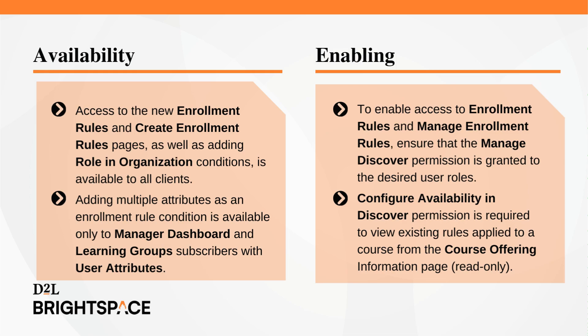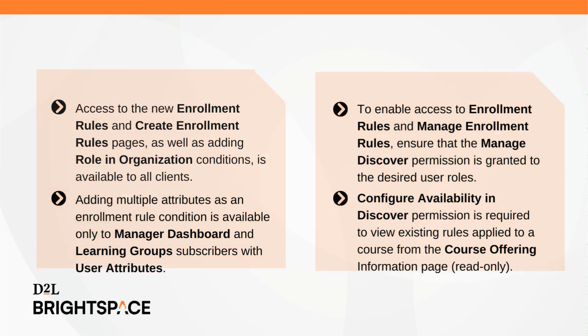Adding Multiple Attributes as an Enrollment Rule condition is available only to Manager Dashboard subscribers with user attributes. To enable access to the Enrollment Rules page, including the ability to create, edit, and delete rules, and the Manage Enrollment Rules link, ensure that the Manage Discover permission is granted to the desired user roles. The Configure Availability and Discover permission is required to view existing rules applied to a course from the Course Offering Information page. This is read-only.